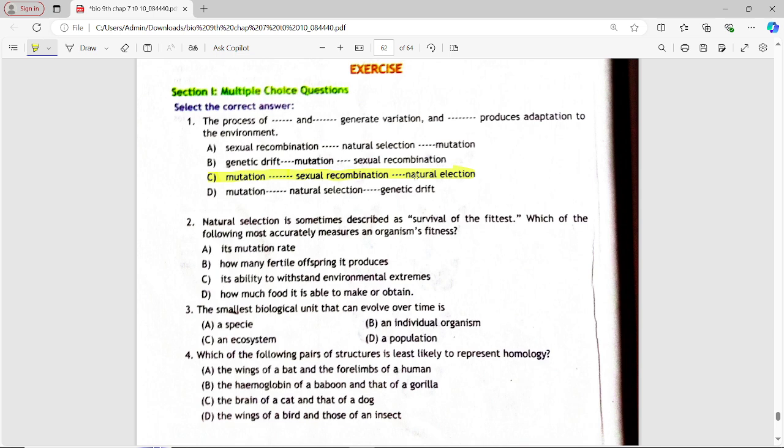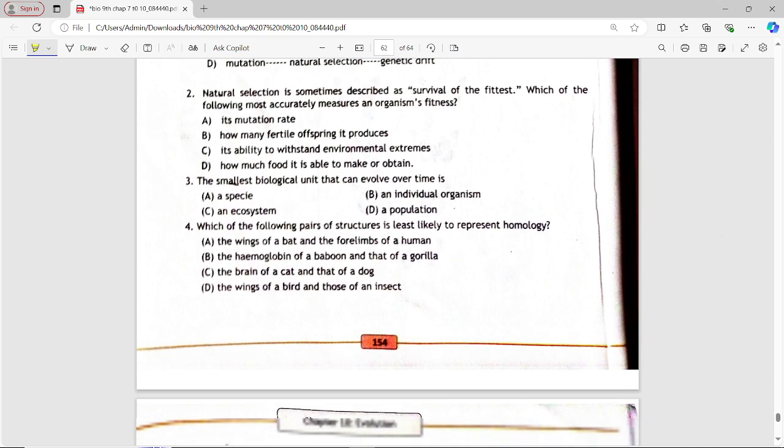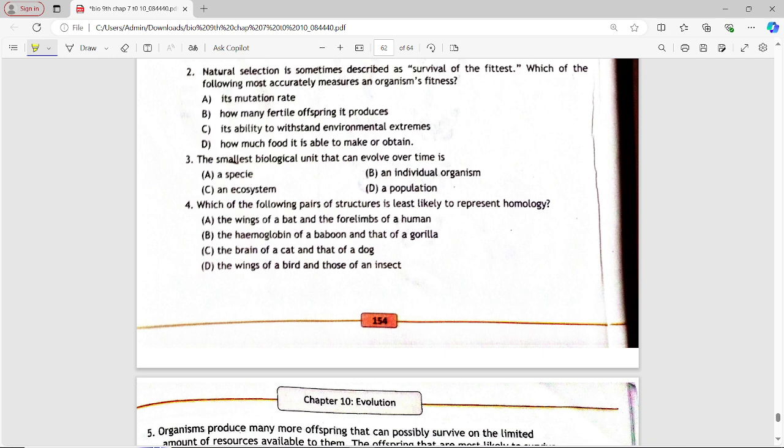Next MCQ is Natural selection is sometimes described as survival of the fittest. Which of the following most accurately measures an organism's fitness? Options are: its mutation rate, how many fertile offspring it produces, its ability to withstand environmental extremes, how much food it is able to make or obtain. Answer is option B, how many fertile offspring it produces.